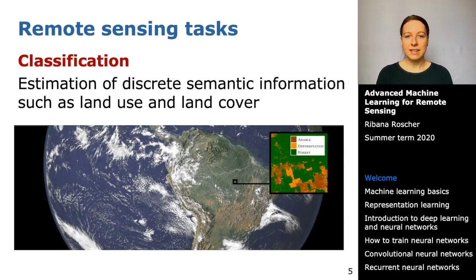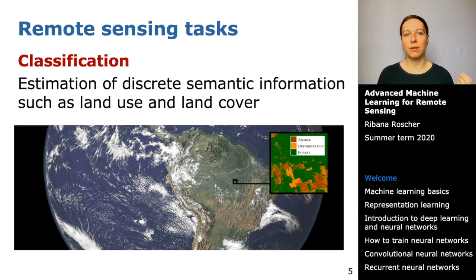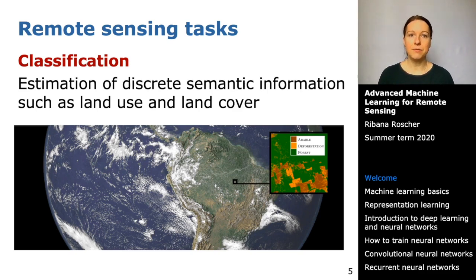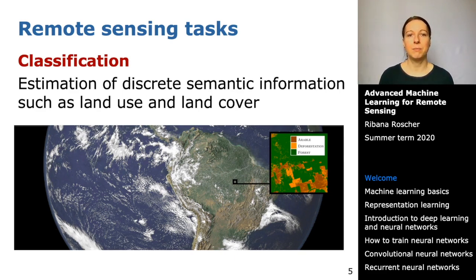Here is an example for classification. In classification we assign each pixel one of — in this case — three classes: arable land, deforestation, or forest. That means we assign each pixel a semantic label that is predefined by us.